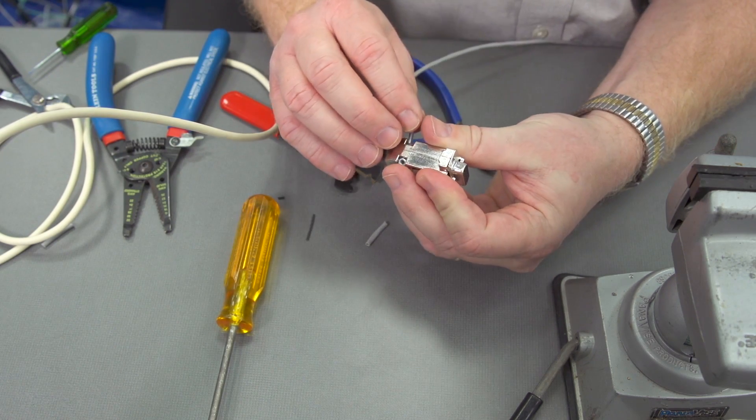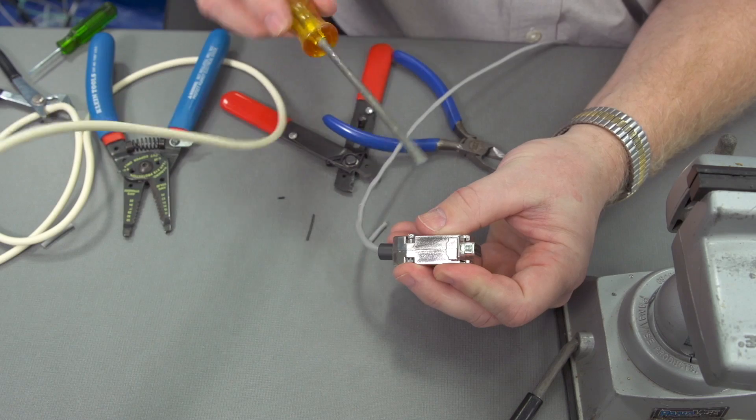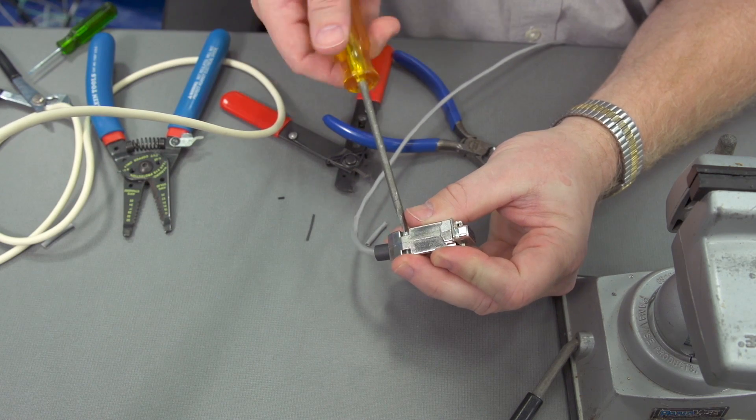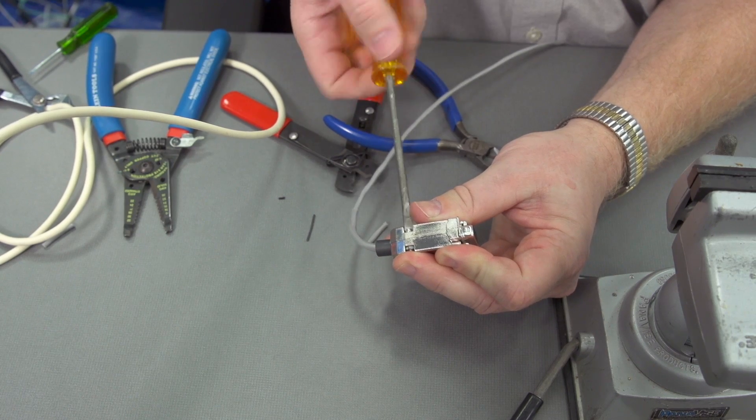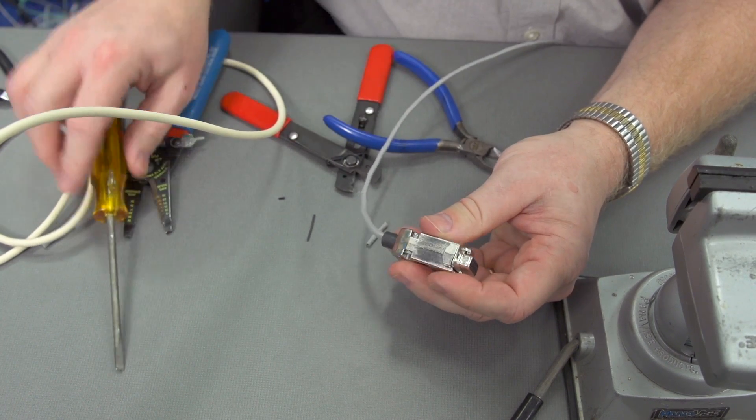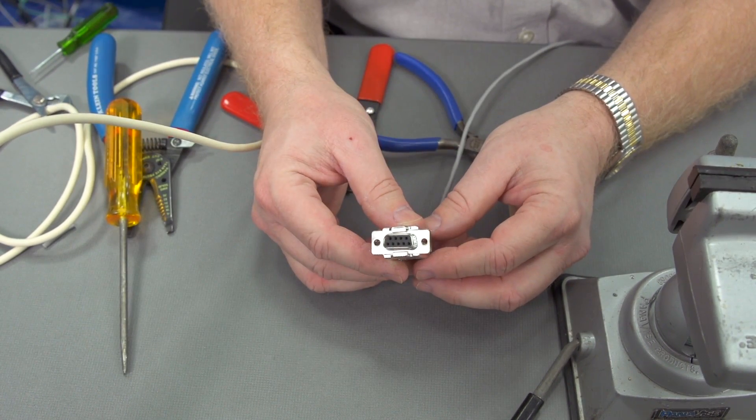We're putting our nut in on the back side. Putting the machine screw in on this side. We can tighten it down. And that's our DB9 female.